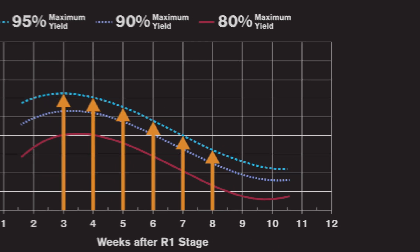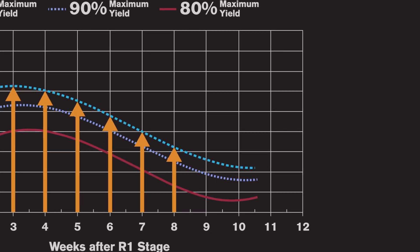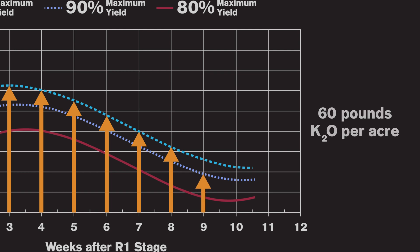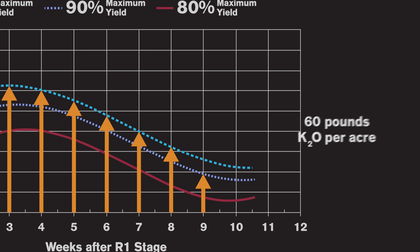If trifoliate leaf K concentrations are below the dynamic critical concentration, producers can supply as much as 60 pounds of K2O per acre until the R5 growth stage, or roughly nine weeks past R1, and expect a significant soybean yield response.